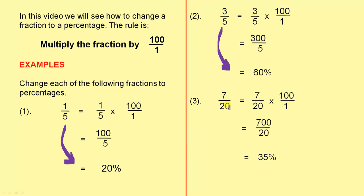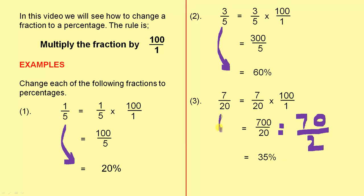Seven over twenty. Seven over twenty multiplied by one hundred over one gives us seven hundred over twenty. Now you could see straight away, if you had a good knowledge of tables, that twenty into seven hundred goes thirty-five times. But if you can't see that, just divide top and bottom by ten and that gives you seventy over two, which works out to be thirty-five. So seven over twenty is thirty-five percent.